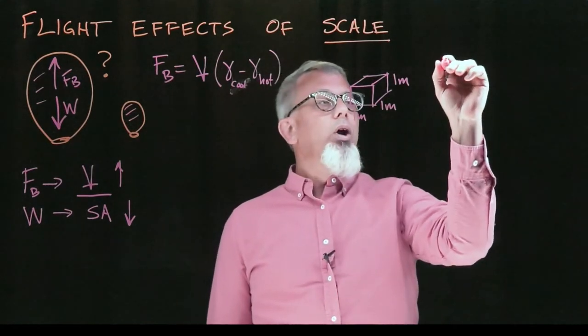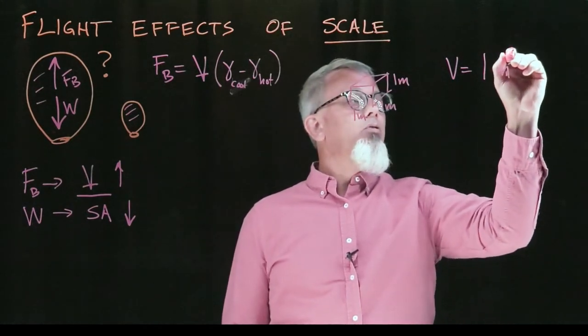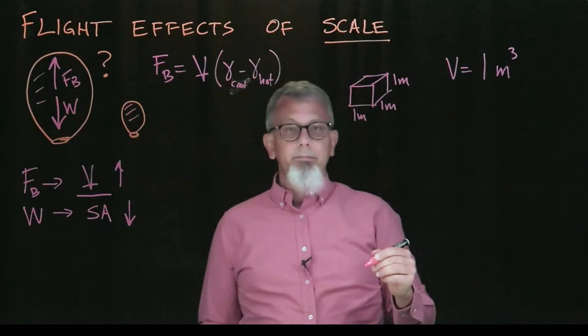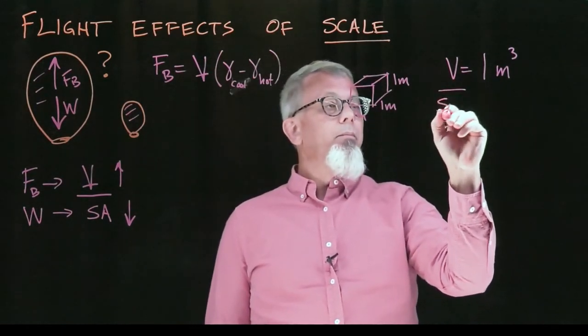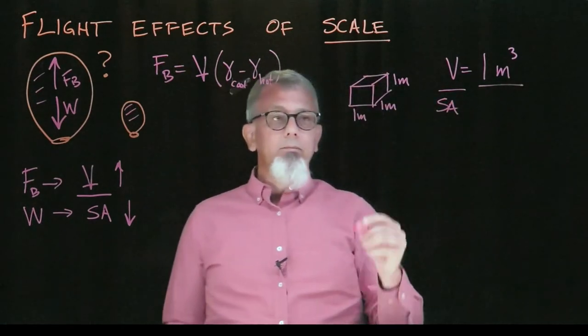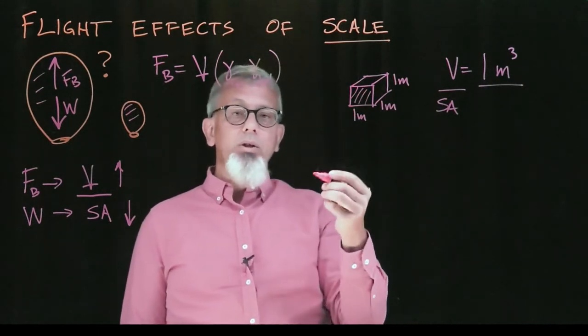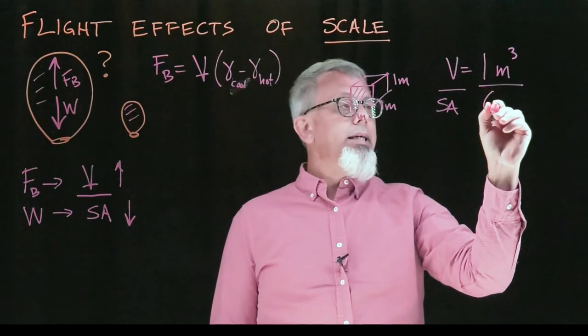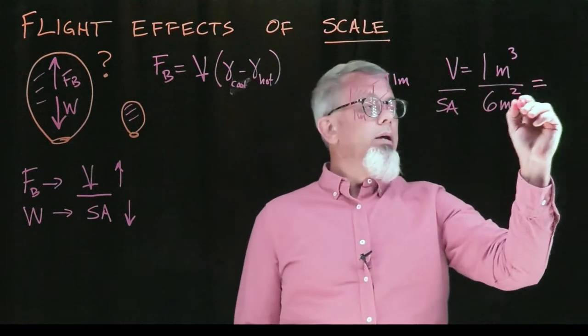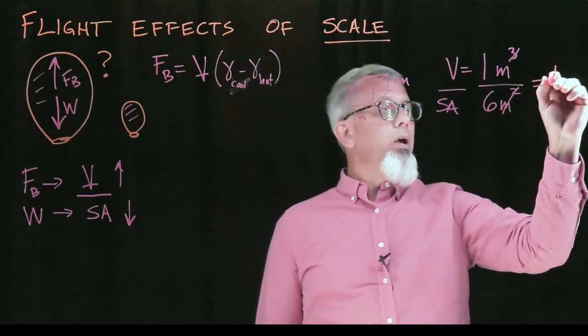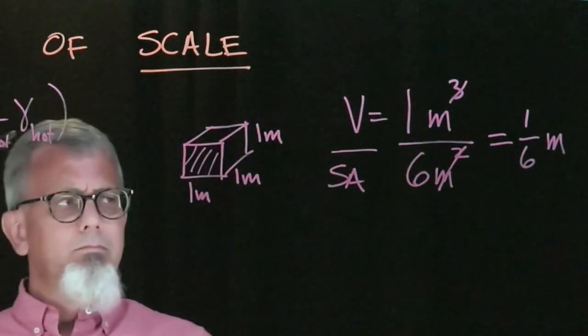If we do that, we're going to find that we have a volume of length times width times height of one meter times meter times meter, or one meter cubed. And then, if I take my surface area, the surface area, well, one of these sides is a meter times a meter, and there are six of them. So, six times one square meter is going to be six meters squared. And so, that value, canceling out two meters on both, ends up being one-sixth of a meter. Oh, it's a length measurement, because it's measured in meters.